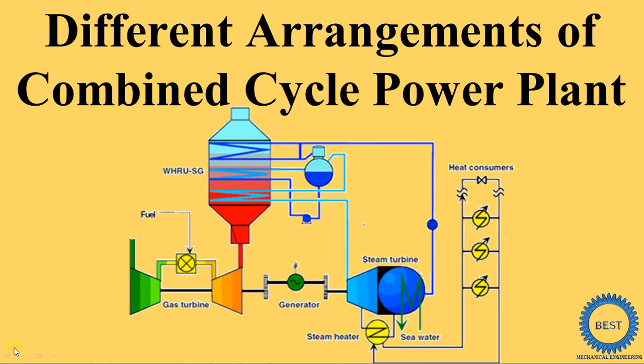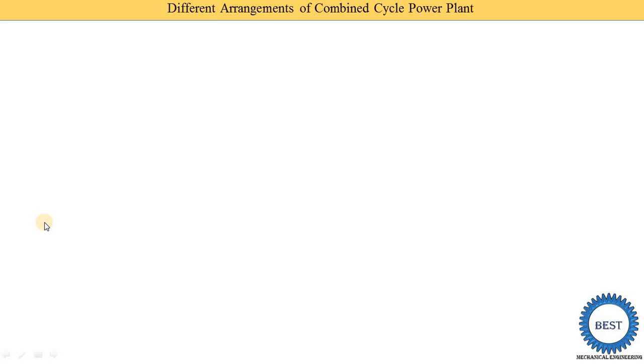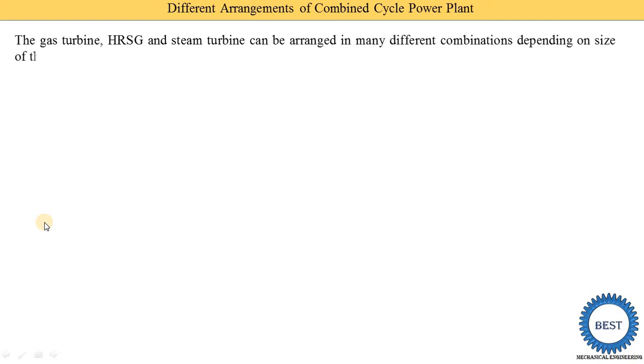In this video I explain different arrangements of combined cycle power plants. In a combined cycle power plant, three main systems are present: the gas turbine power plant, the HRSG (heat recovery steam generators), and the steam turbine power plant. If we arrange these components differently or add supplementary fuel firing, it results in different arrangements of combined cycle power plants.